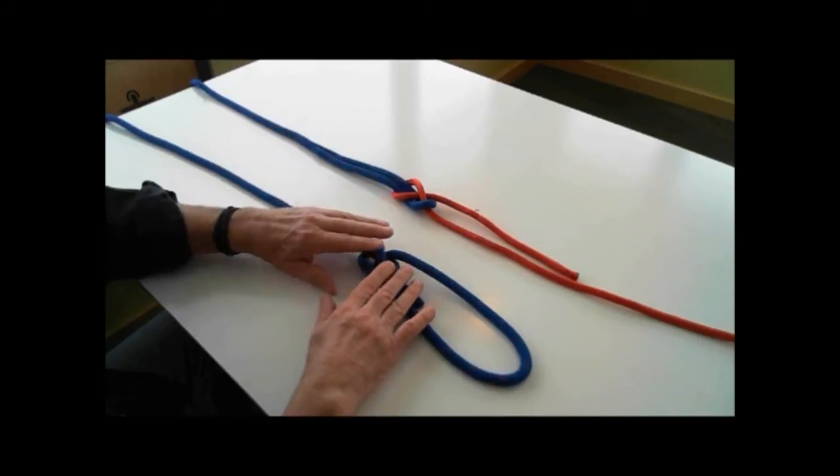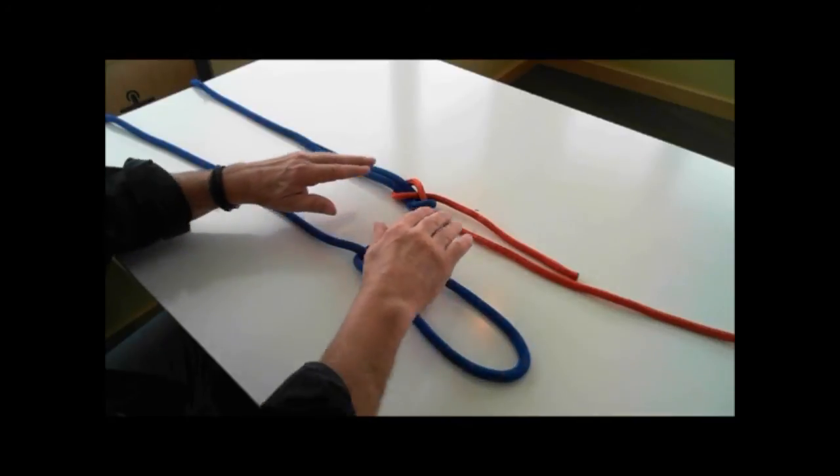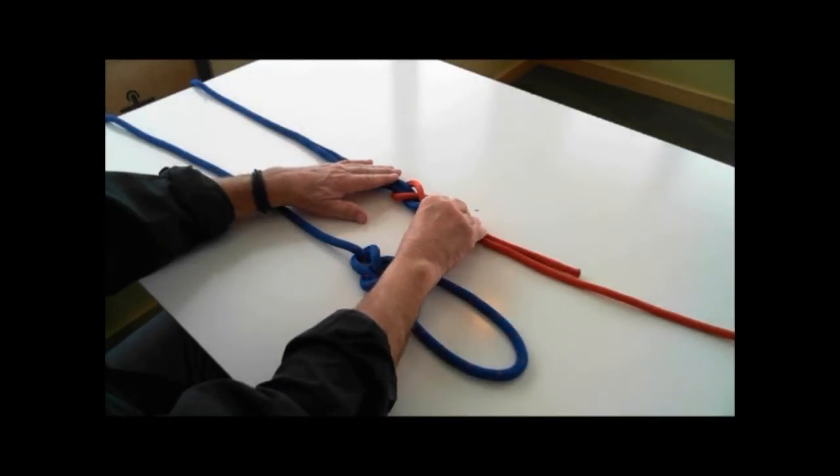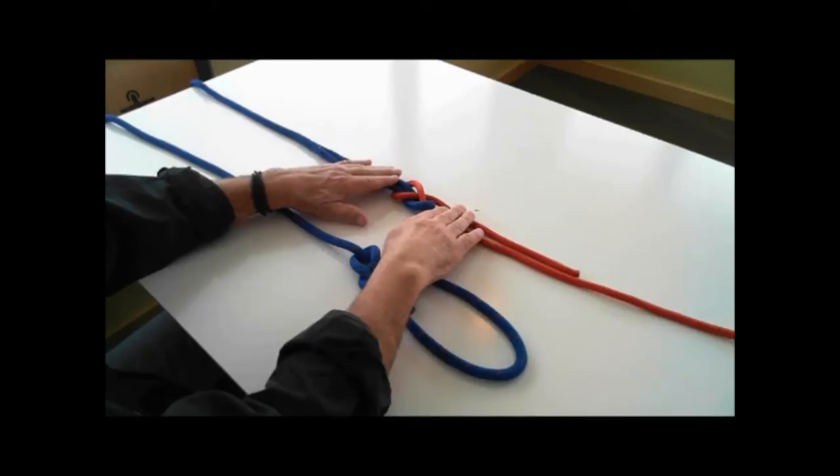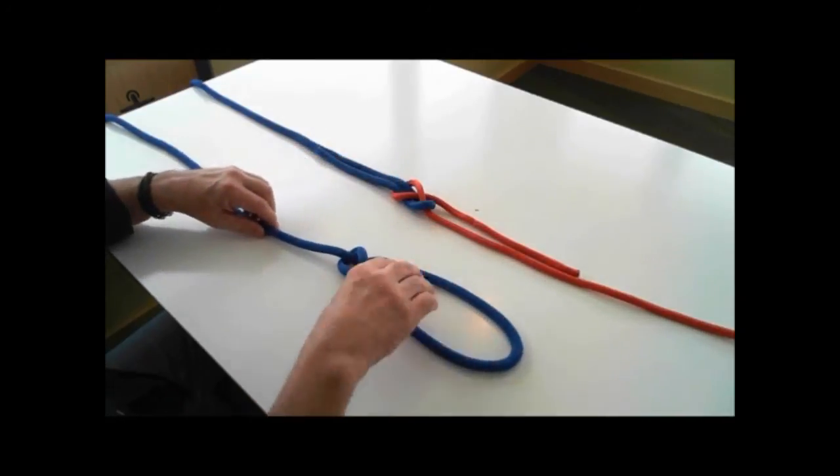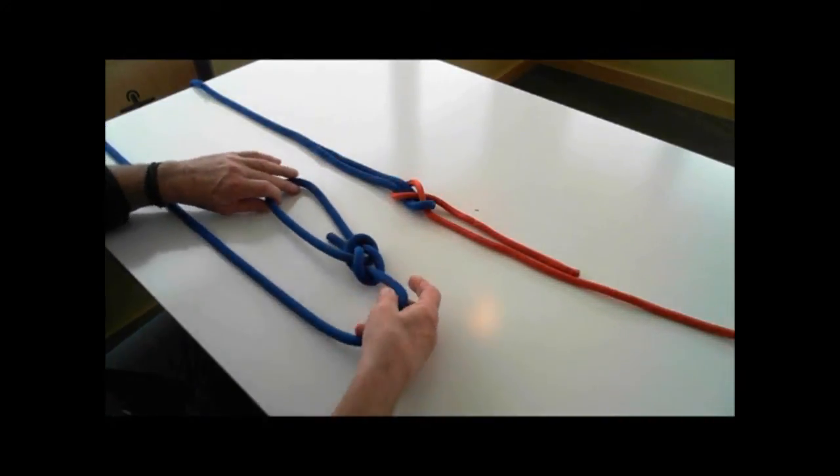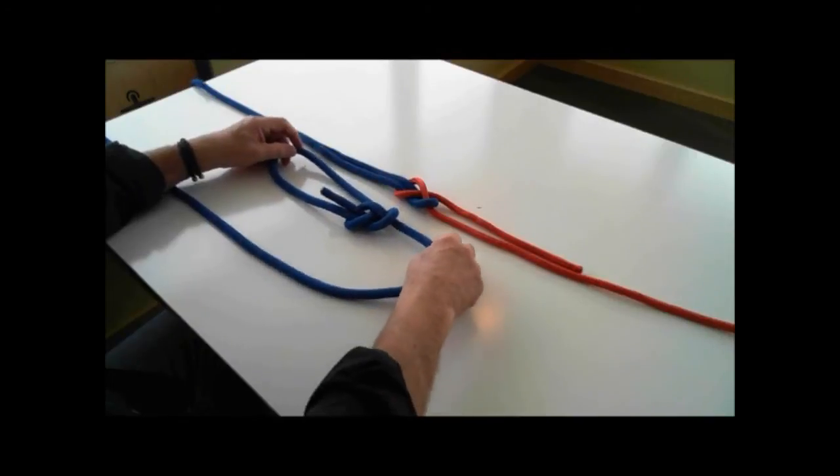Now we have a bowline, a non-slipping loop on the end of the line. This is a sheet bend which ties two lines together. But if you look, they are the exact same knot tied in reverse order.